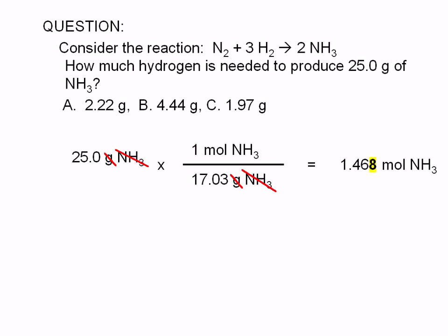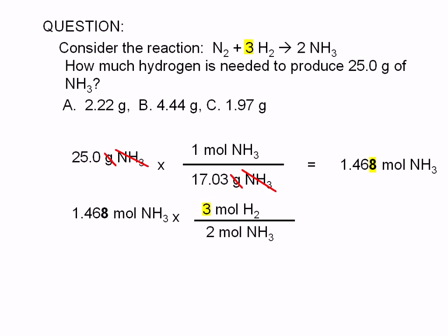To calculate the amount of hydrogen needed, all we have to do is multiply the moles of ammonia produced by a conversion factor. We use the coefficients in the balanced equation to construct our conversion factor. Since we are interested in hydrogen, we put the coefficient of hydrogen in the numerator. The coefficient of hydrogen in the balanced equation is 3, and we put the coefficient of ammonia in the denominator. The coefficient of ammonia in the balanced equation is 2. The ratio of coefficients serves as a conversion factor, and the answer we get here is 2.20 moles of H₂.